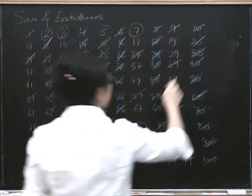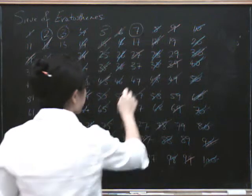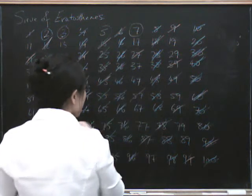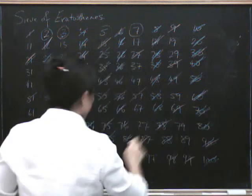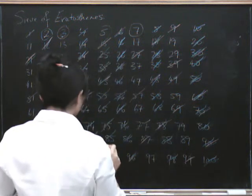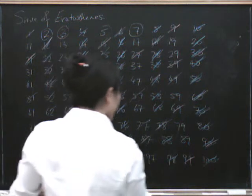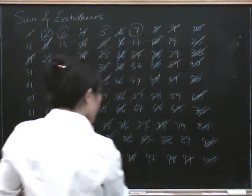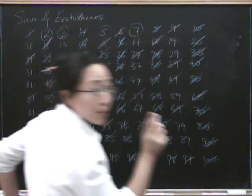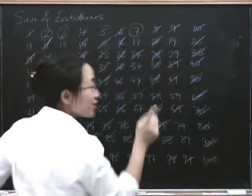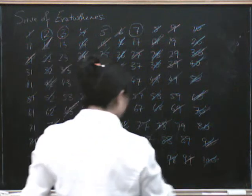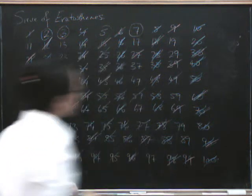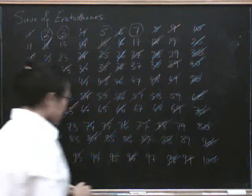35, 42 had already gone, 49, what's next? 56 had already gone, 63, 70, 77, what's after 77? 84, 91. Stop me if I do something wrong. Oh, you can't, I'll just do it wrong anyway. 91, 98. Okay, so that's all the ones divisible by 7.